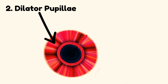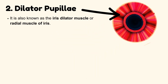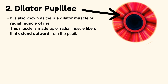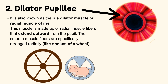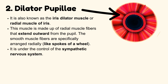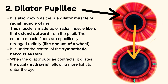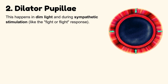Number 2: Dilator pupillae, also known as the iris dilator muscle or radial muscle of the iris. This muscle is made up of radial muscle fibers that extend outward from the pupil. The smooth muscle fibers are specifically arranged radially, like the spokes of a wheel. It is under the control of the sympathetic nervous system. When the dilator pupillae contracts, it dilates the pupil, causing mydriasis, thus allowing more light to enter the eye. This happens in dim light and during sympathetic stimulation, like the fight or flight response.